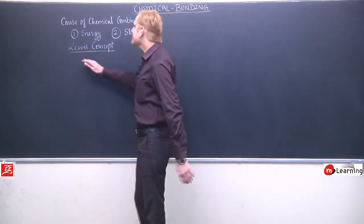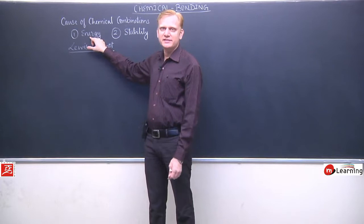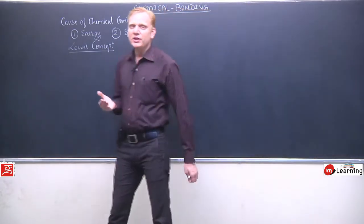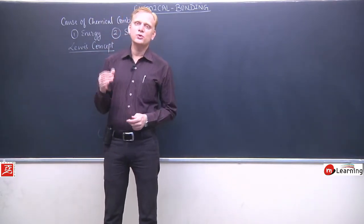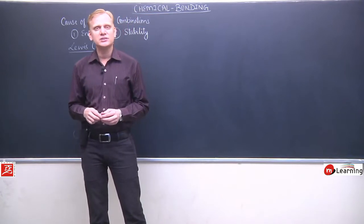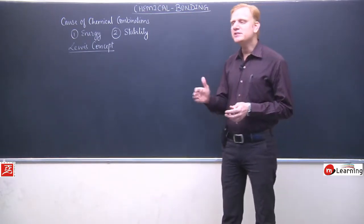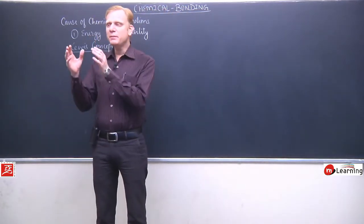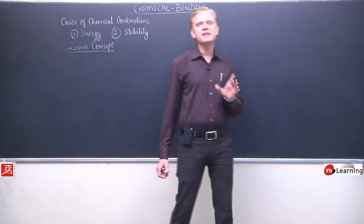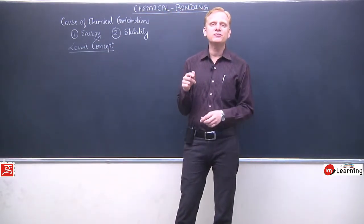What exactly is the Lewis concept? Noble gases की energy कम होती है in the atomic state और stability ज्यादा होती है। The reason being their electronic configuration — helium forms a stable duplet, और helium को छोड़कर बाकी सारे noble gases एक stable octet form करते हैं, meaning the outermost shell has 8 electrons. The Lewis concept says that this 8-electron outermost shell is a special electronic configuration which makes the element stable in that configuration.